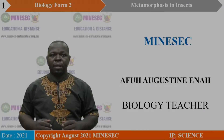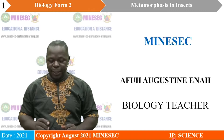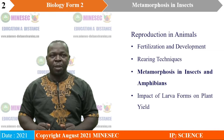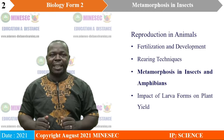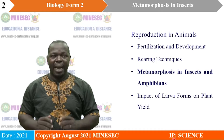This topic, Reproduction in Animals, contains the following lessons: fertilization and development, rearing techniques, and metamorphosis in insects and amphibians, which is subdivided into two lessons — metamorphosis in insects and metamorphosis in amphibians. Today we will be looking at metamorphosis in insects, and the impact of larva forms on plant yield.